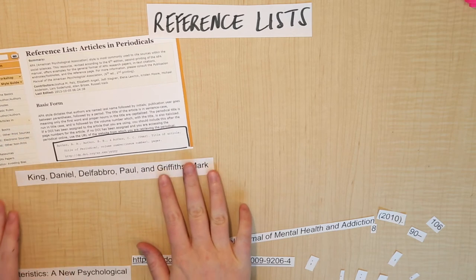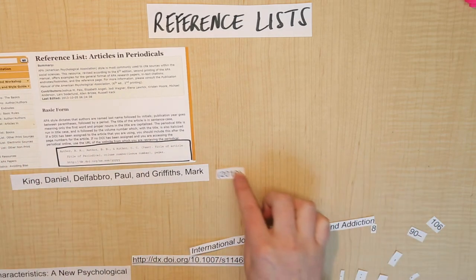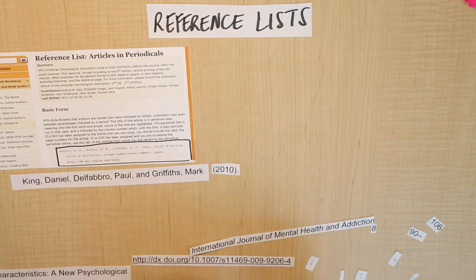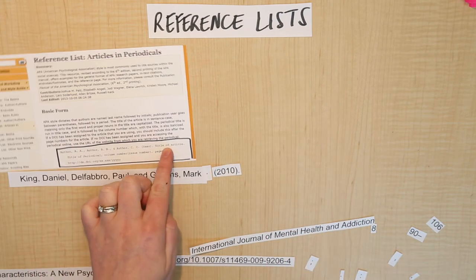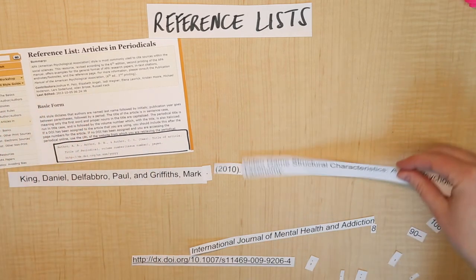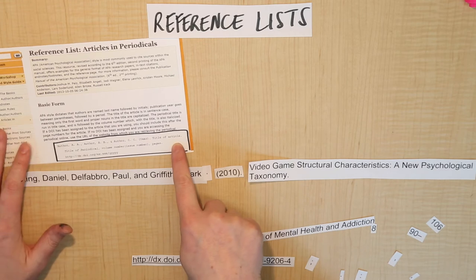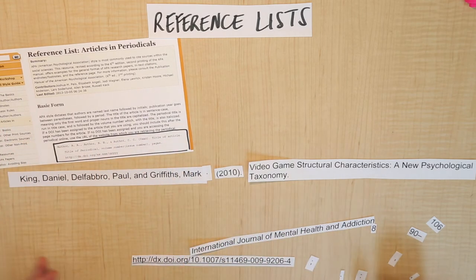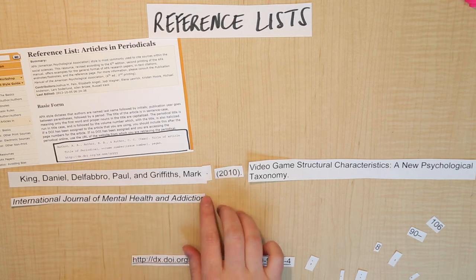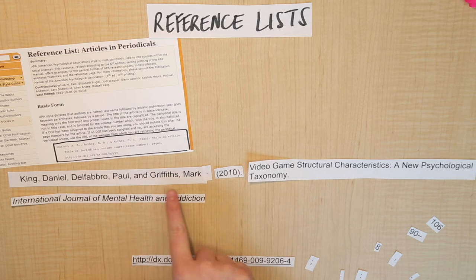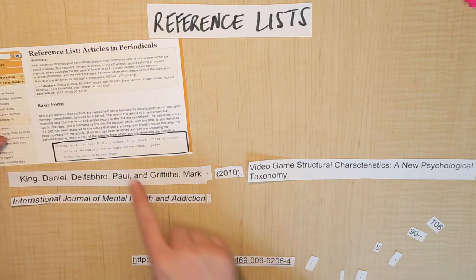The first thing is to put the authors in. Then the next part is the year — so 2010 — and I just noticed there's a period before that as well, so I need to include that. Then the title of the article comes next: 'Video game structural characteristics: A new psychological taxonomy.' The next piece is the title of the periodical — the journal title — and as we talked about before, this is the part that's always in italics: 'International Journal of Mental Health and Addiction.'